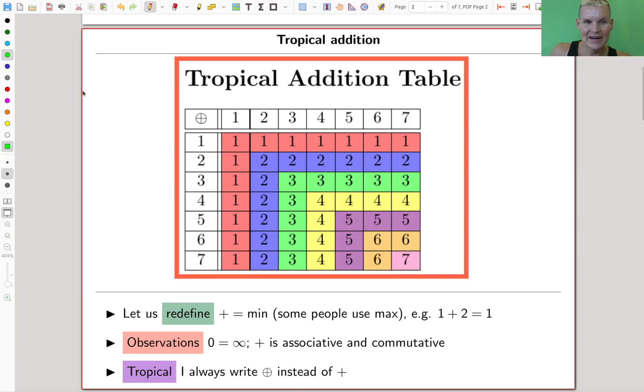So what is tropical addition? We do the following trick. It looks very strange but it works very well. Instead of having a plus, we do a min. So one plus two is one because I take the minimum of them. So here's a tropical addition table. Five plus three is three because we take the min.